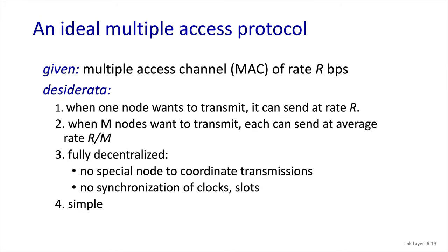Given that our channel has a bandwidth of R bits per second, we have some design goals. One is that if a single node needs to transmit, it can use the full bandwidth of the channel, R bits per second. The second is that if multiple nodes need to transmit, they can each transmit at an average rate of R over M, meaning the channel bandwidth is still fully utilized. Ideally this would use a fully decentralized algorithm such that there's no controller node that has to coordinate transmissions, and also no expensive synchronization of clocks. And we want this to be simple and easy to implement.